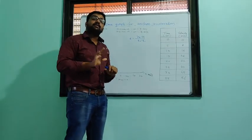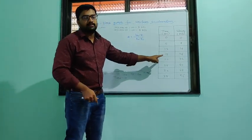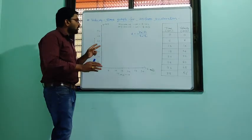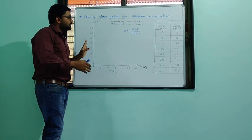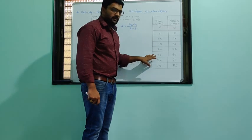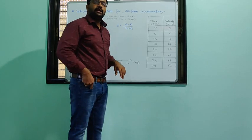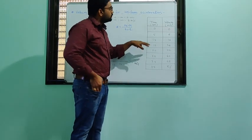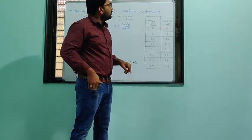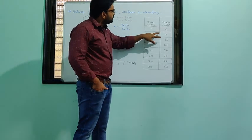Acceleration does not change as time passes. Some data is given to draw a velocity-time graph for uniform acceleration. The first column gives time in seconds: 0, 5, 10, 15 — an interval of 5 seconds — and velocity is given in meters per second. We have to first study whether this acceleration is uniform or not.